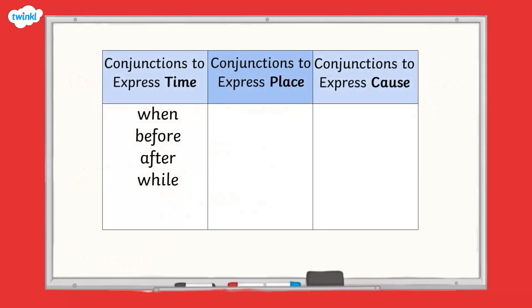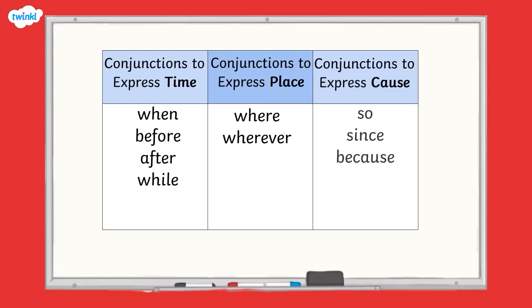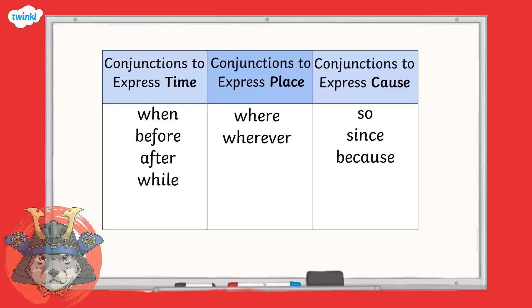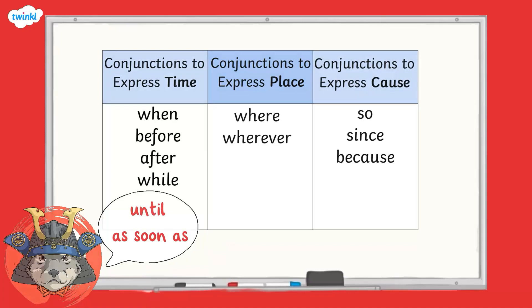Let's take a look at some other conjunctions that can be used in this way. When, before, after and while can be used to express time. Where and wherever can be used to express place. So, since and because can be used to express cause. Although this table shows some of the more common conjunctions, you might know of some others. For example, until and as soon as can also be used to express time.